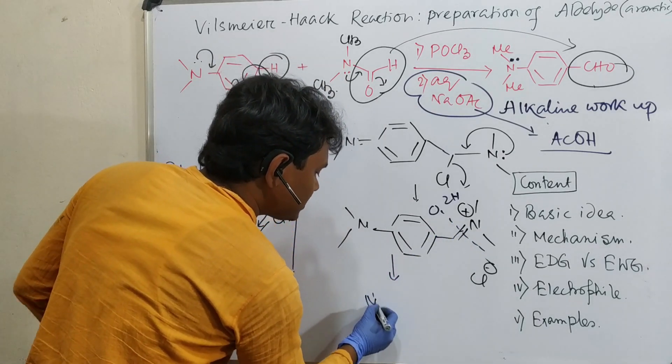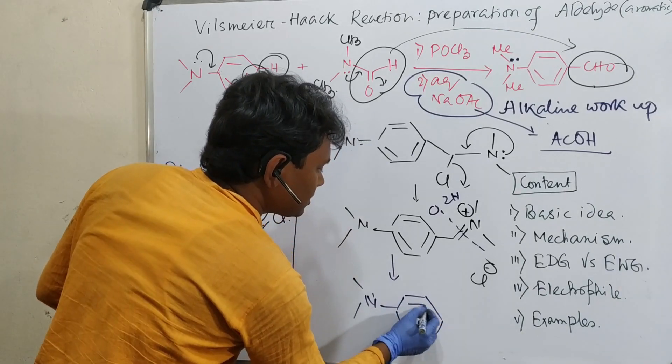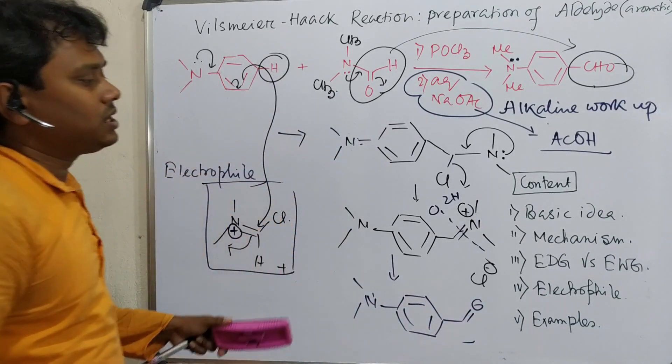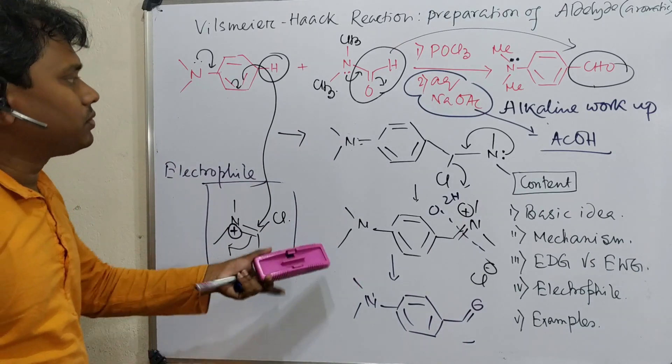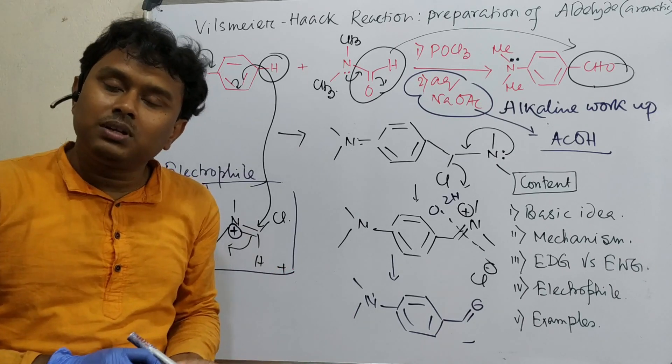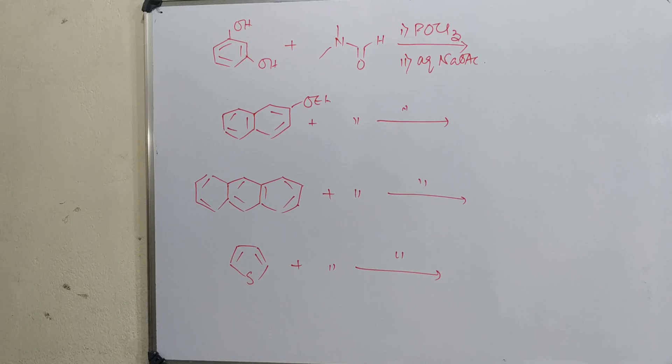Ultimately, in this way it will result in the aldehyde product. Everything will remain as is. So this is how the aldehyde is produced using this mechanism. Now let's discuss a few examples to clarify the concept properly.